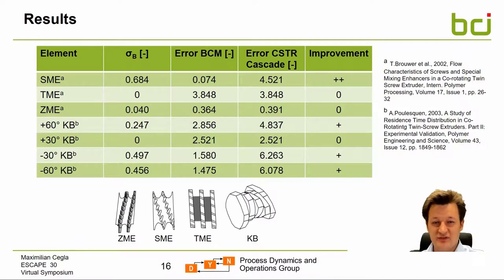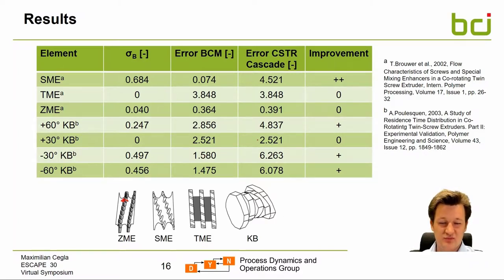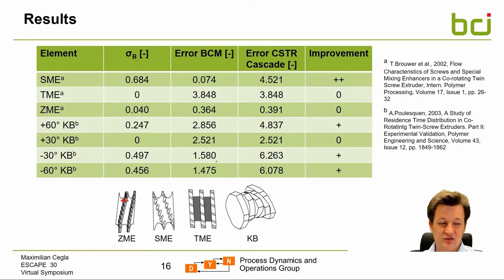Putting the results into numbers: for screw mixing elements there is a great improvement, almost eliminating the error relative to the CSTR cascade reference from the original model. For turbine mixing elements, almost no improvement was observed. For tooth mixing elements there is a slight improvement, since a small portion of the flow can pass via the teeth. For kneading blocks with a 60° staggering angle, we halved the prediction error with a backflow of about 0.25. For a 30° staggering angle, no improvement was achieved. For negative 30° and negative 60° staggering angles, the prediction error was reduced by 75% at a backflow ratio of about 0.5.